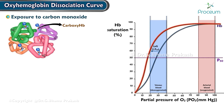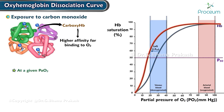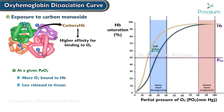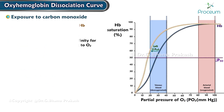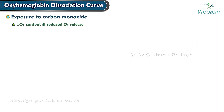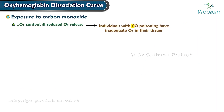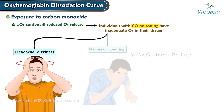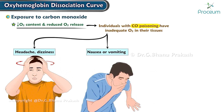Carboxyhemoglobin has a higher affinity for binding to oxygen, meaning that at a given partial pressure of oxygen, more oxygen remains bound to hemoglobin and less is released to the tissues. The oxygen-hemoglobin dissociation curve is shifted to the left and the P50 is decreased. Because of the decreased oxygen content and reduced oxygen release, individuals with carbon monoxide poisoning have inadequate oxygen in their tissues, causing clinical manifestations such as headache, dizziness, nausea, vomiting, and malaise.